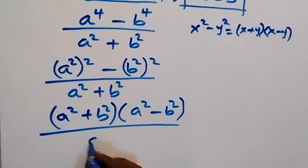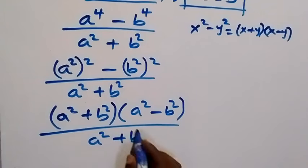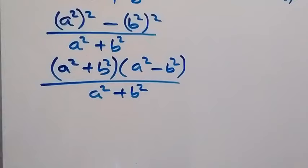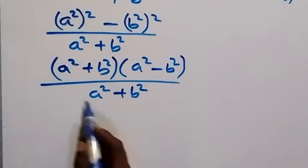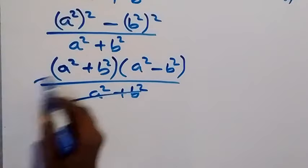Now when we look at this, we have a squared plus b squared in the numerator and a squared plus b squared in the denominator. This we cancel out here.